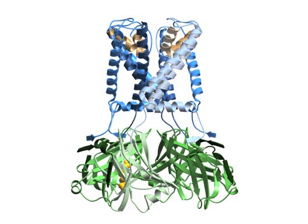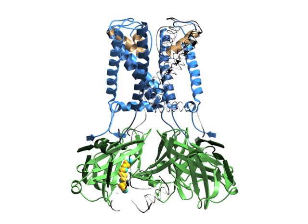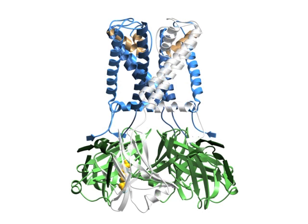Domain reorientation diminishes the binding pocket such that binding is no longer favoured after unlatching. By removing the front subunit of the tetramer, this movie shows the spermine bound inside the wall of the assembly. As the domains reorient, the spermine is displaced.